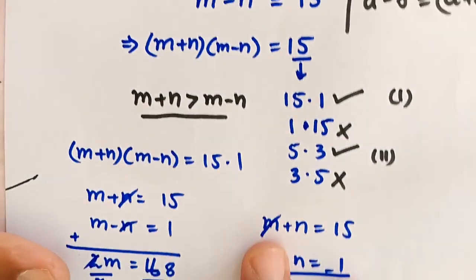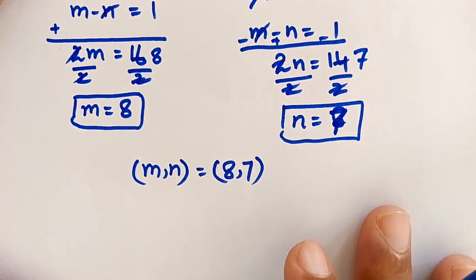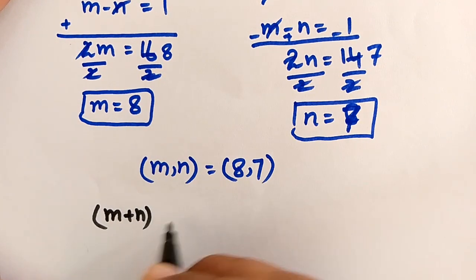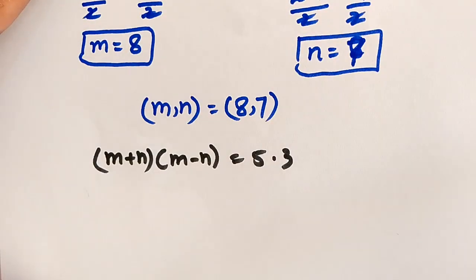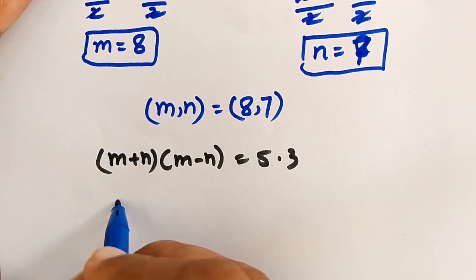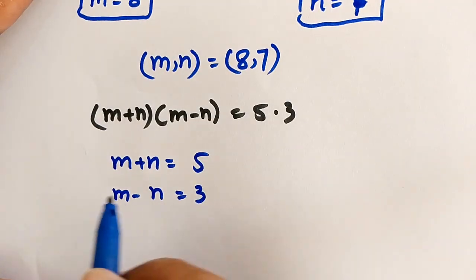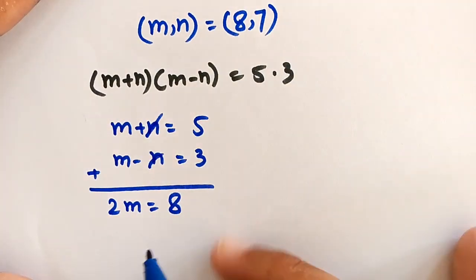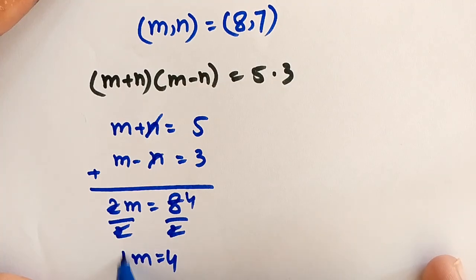For Case 2: (m+n)(m-n) = 5×3. So m+n = 5 and m-n = 3. Adding these two equations, the n terms cancel: 2m = 8. Dividing both sides by 2 gives m = 4.